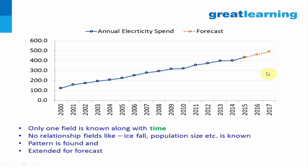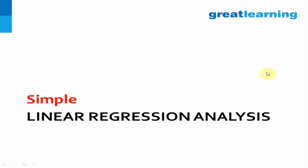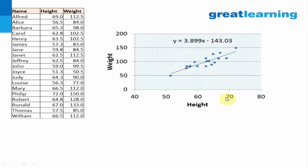At times you will have data where there are some X variables also. Let me show you what simple linear regression is. In simple linear regression, take a very simple example: you have height and you have weight. When height increased, weight also increased — when height was 56, weight was 84; when height increased to 69, weight increased to 112. When height decreases, weight decreases. If you try to plot it, you see a clear-cut trend.